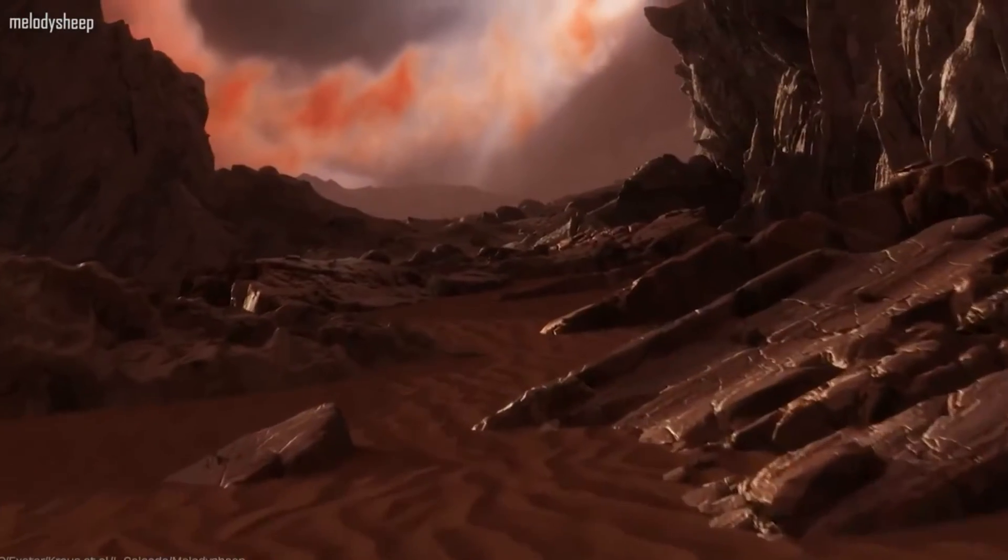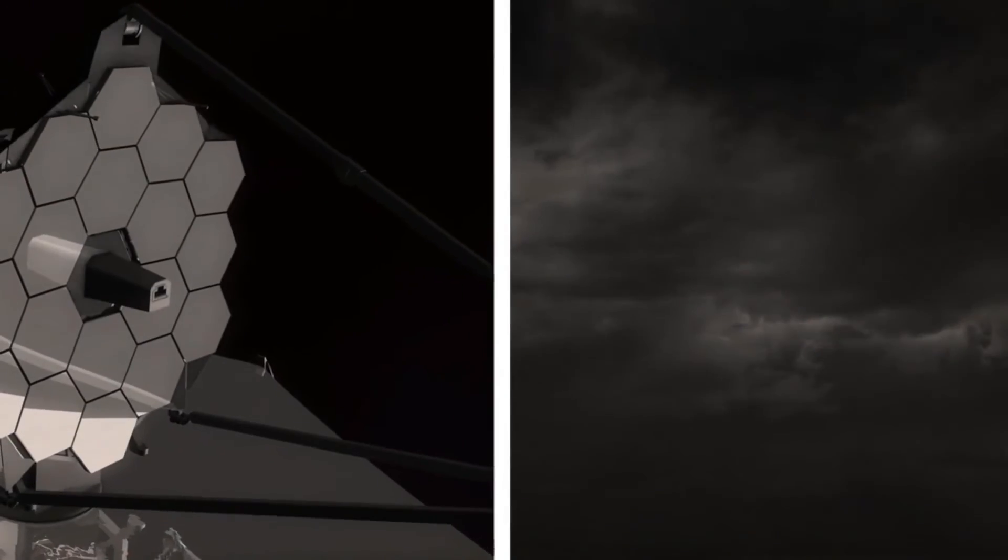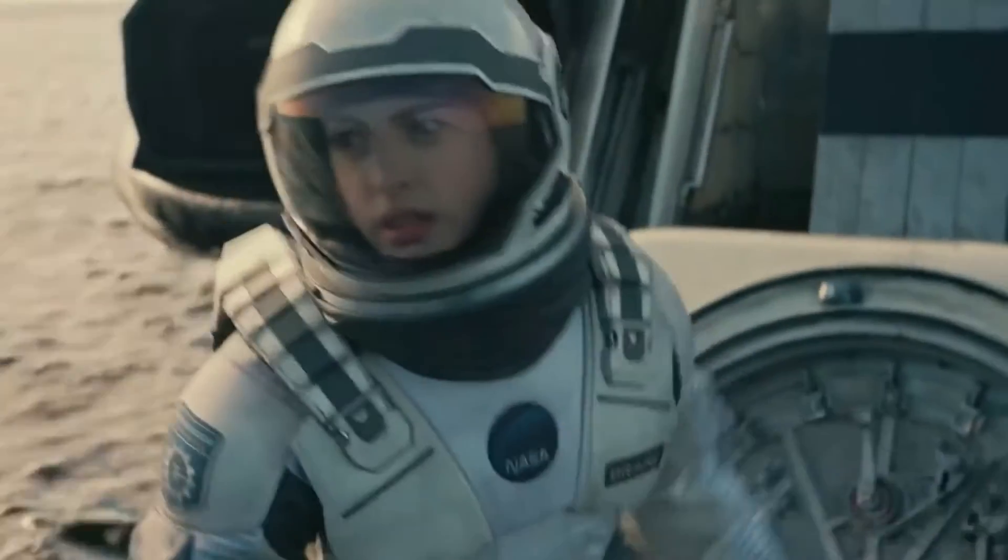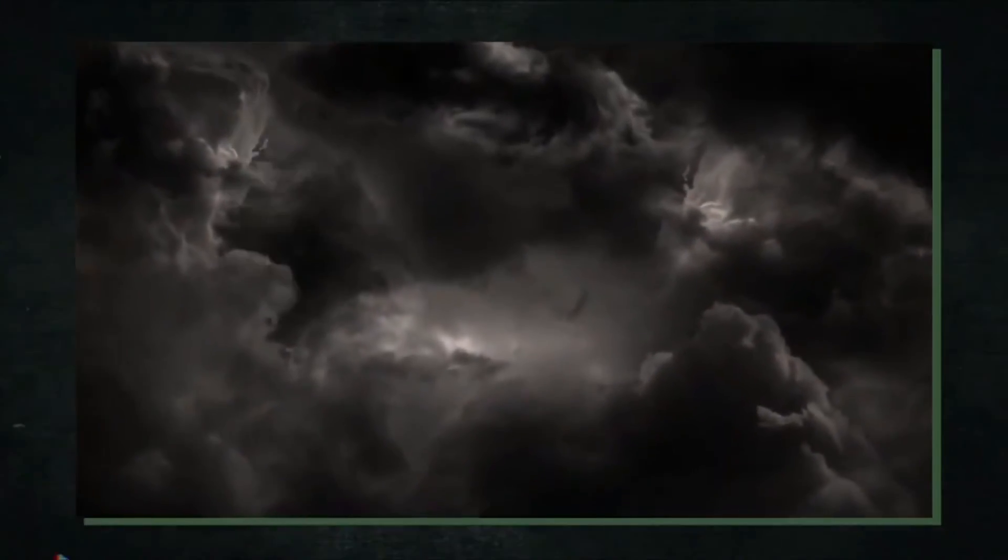This is where the James Webb Space Telescope comes in. The JWST was created specifically to study distant objects like exoplanets, and it can observe in the infrared spectrum.